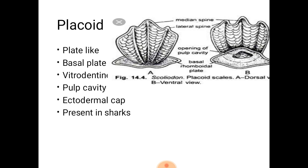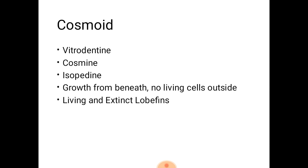Placoid scales, as discussed earlier, are plate-like. The basal plate has an outer layer of enamel-like material known as vitrodentine, and they have a pulp cavity. An ectodermal cap is present which can be seen from the outside, and they are present in sharks.